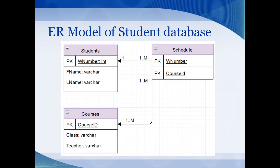Here we have an ER model of the student database — an entity relationship diagram. Notice that every student might have multiple classes, so this is a one-to-many relationship. In the student table, first name correlates with the W number — that's a one-to-one relationship. Any time you have a one-to-one relationship, you might want to consider placing those items in the same table, as we've done with the student table.